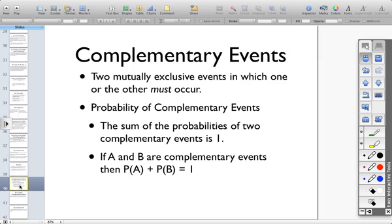Moving on to the very last example, complementary events. Complementary events are actually pretty easy. Basically, if you have two exclusive events, mutually exclusive events, where one or the other has to occur, then the probability of the two events together is one. Such as flipping a coin, the probability of flipping heads plus the probability of not flipping heads would be one.